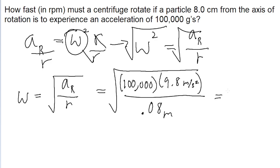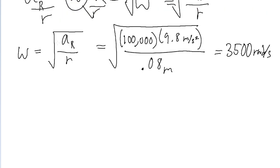Put this into our calculator, and we find an angular speed of 3,500 radians per second. But the problem asks us to find it in RPM, or revolutions per minute. So we're going to have to do a couple unit conversions.